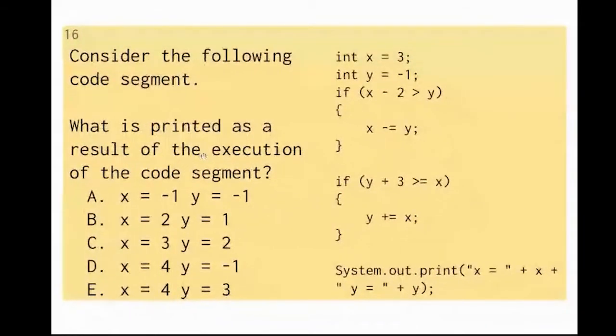All right, so it says consider the following code segment. All right, so we have all these variables, x and y. So I'm going to just write x and y and try to keep track of all their values. So initially, it's 3 here and then negative 1 here.